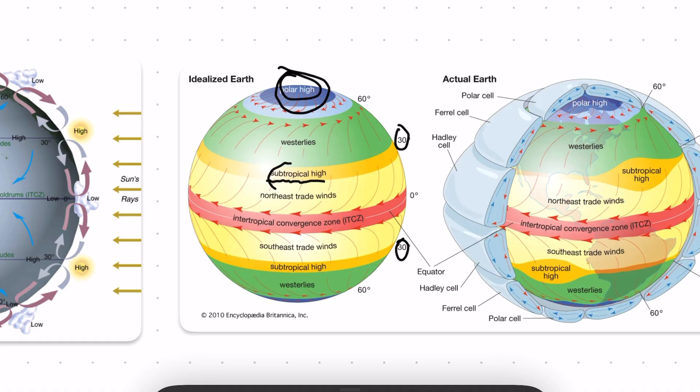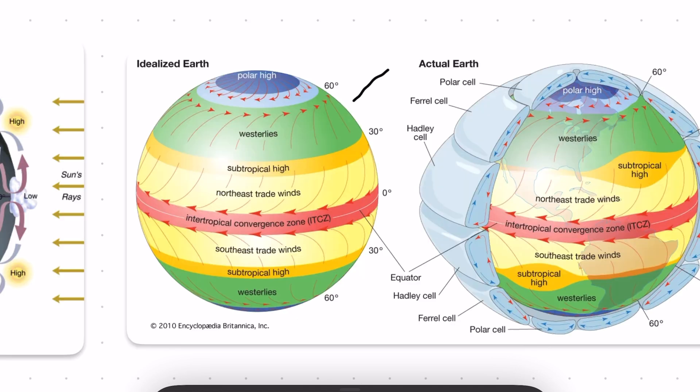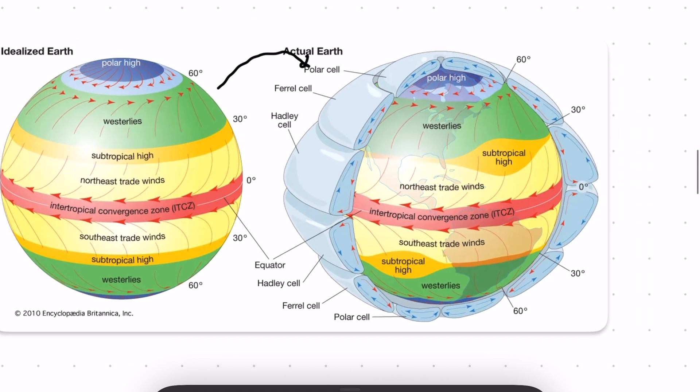And these two spots of high pressure is why we have groupings of deserts in these general locations. But these systems are impacted by the geography of the planet, causing slight deviations from how it should theoretically be.